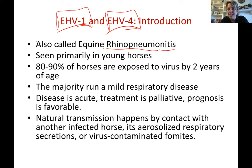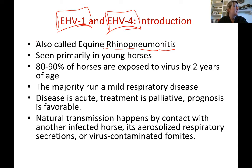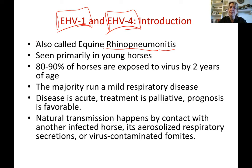Equine herpes virus type 1 causes a somewhat more severe respiratory disease than type 4, but can also cause abortion in the pregnant mare, neurologic disease, and other conditions. Both types cause respiratory disease, but type 4 is milder than type 1. Type 1, because it has affinity for a variety of other cells, can also cause neurologic disease and abortion.